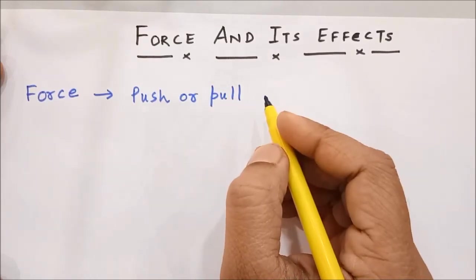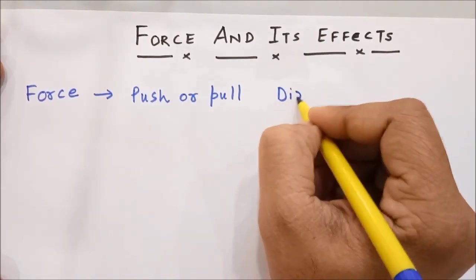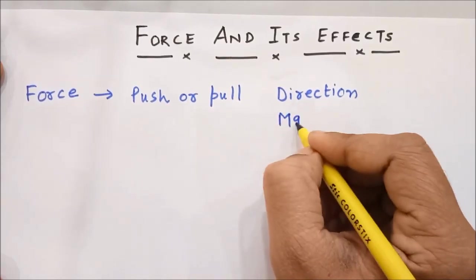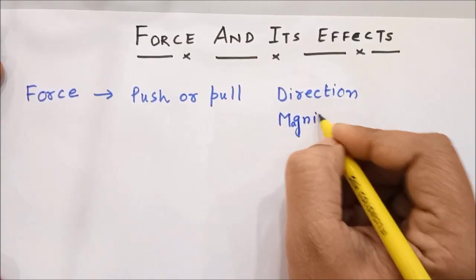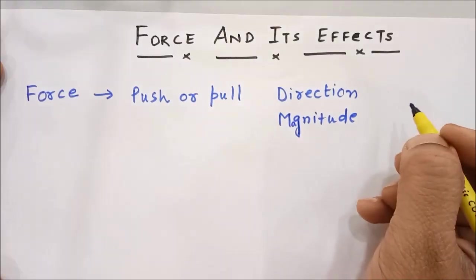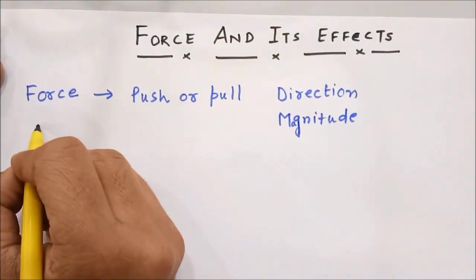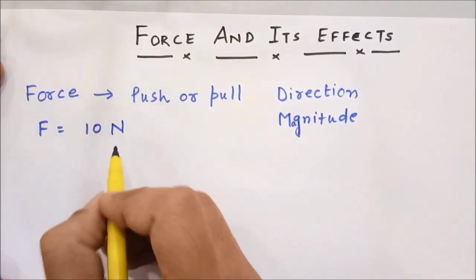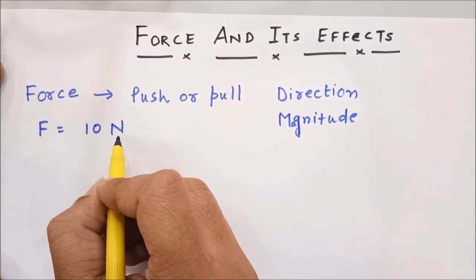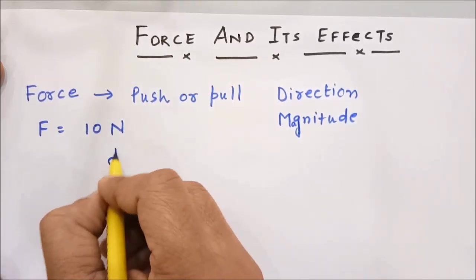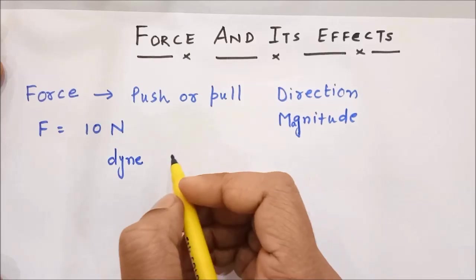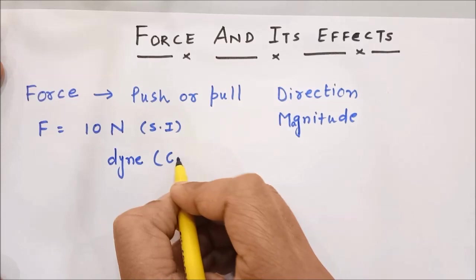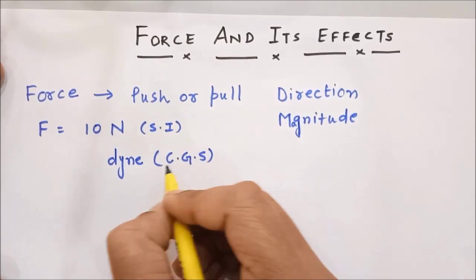Force is a vector quantity, it has got direction and magnitude both. Magnitude means simply a number. Suppose force on an object is 10 Newton. Newton is the SI unit of force and dyne is the CGS unit of force. Standard International, Centimeter Gram Second.